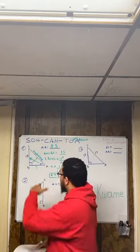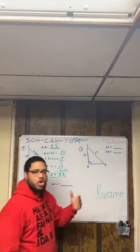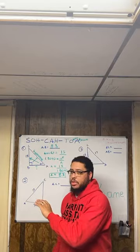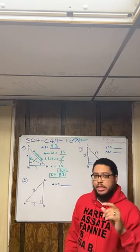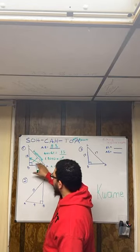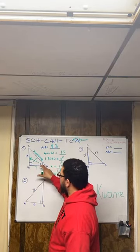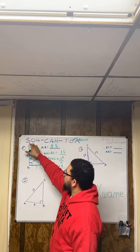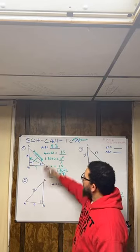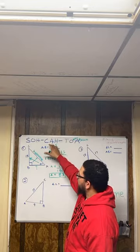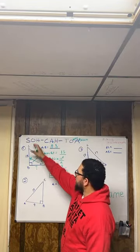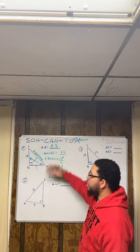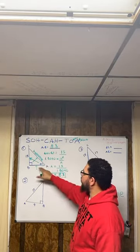Tangent represents the relationship between the opposite side from an angle in a right triangle divided by the adjacent side. Sine represents the relationship between the opposite side divided by the hypotenuse. Cosine means the adjacent side divided by the hypotenuse. So sine and cosine deal with the hypotenuse, while tangent deals with the opposite and adjacent sides only.